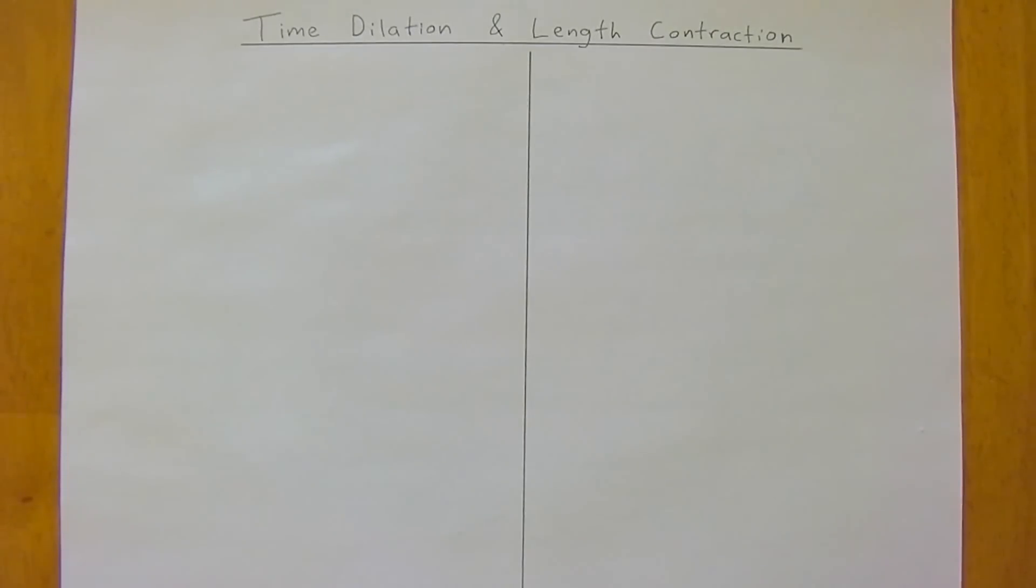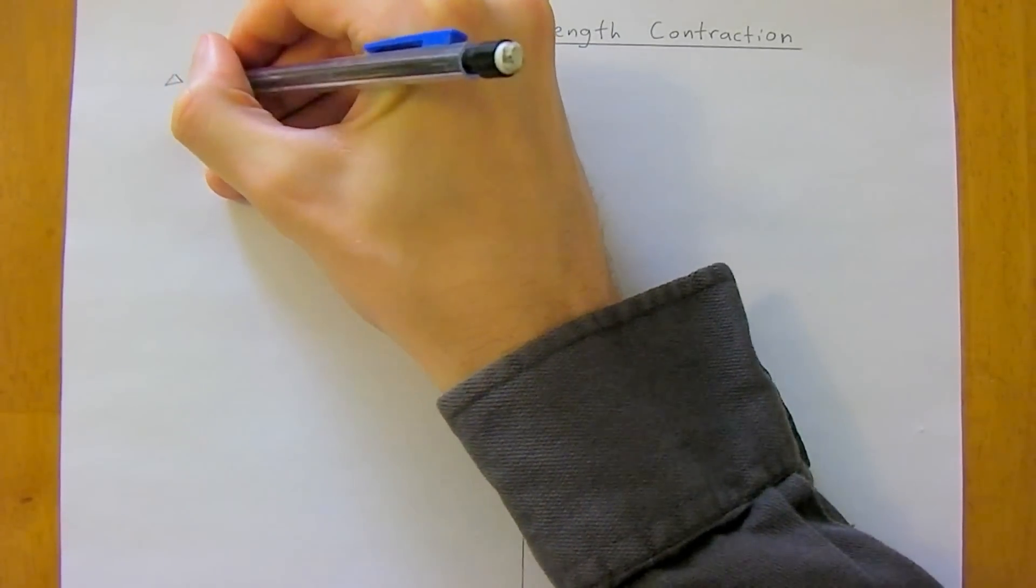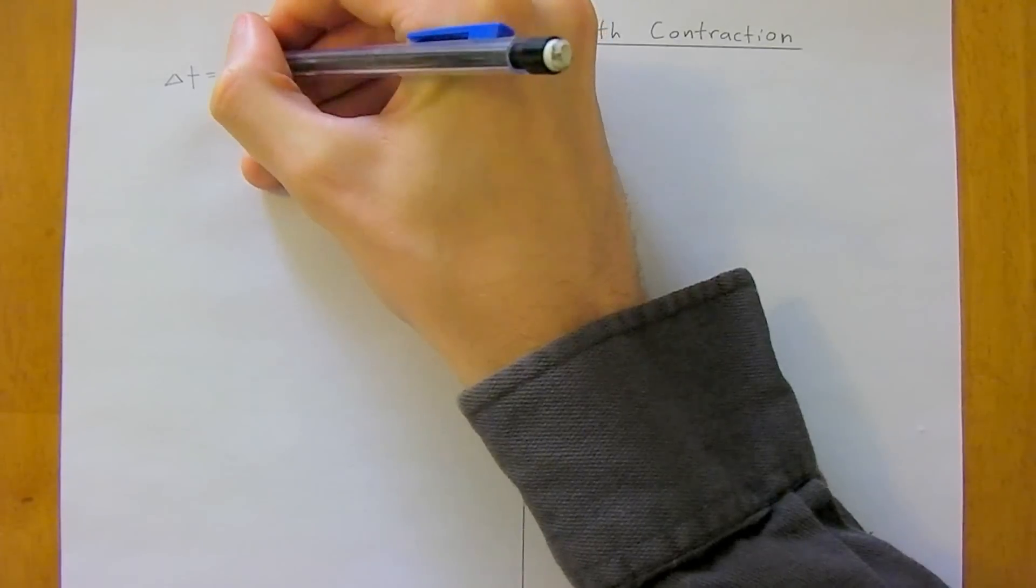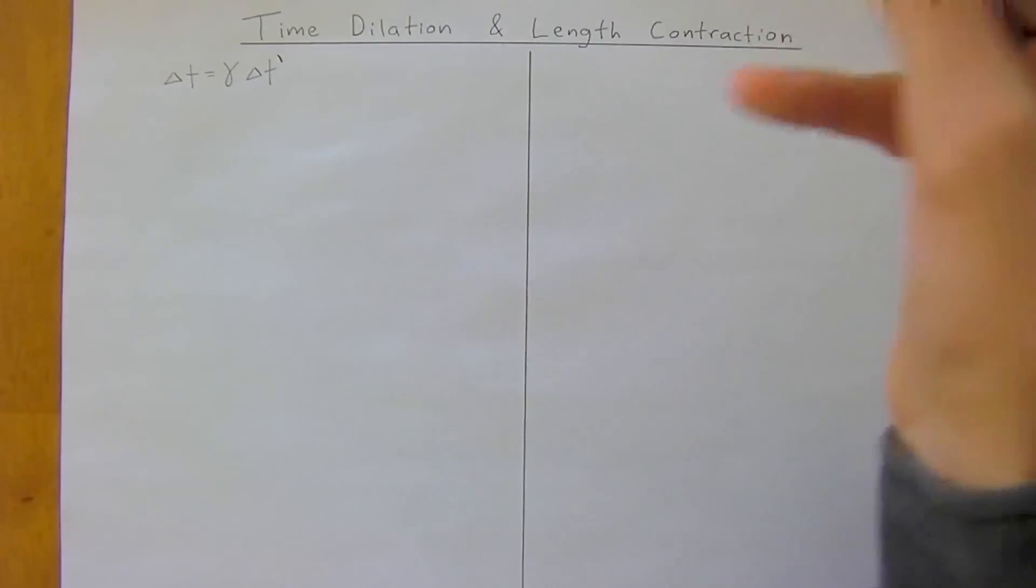So these two formulas are represented by delta t equals little gamma times delta t naught. And in this case,